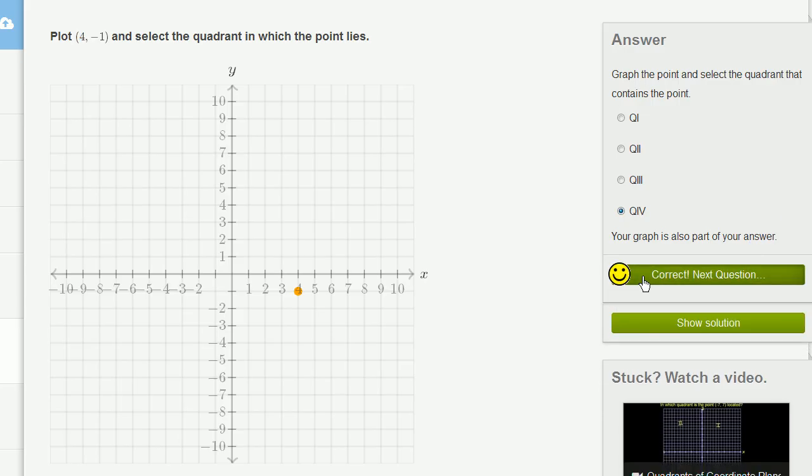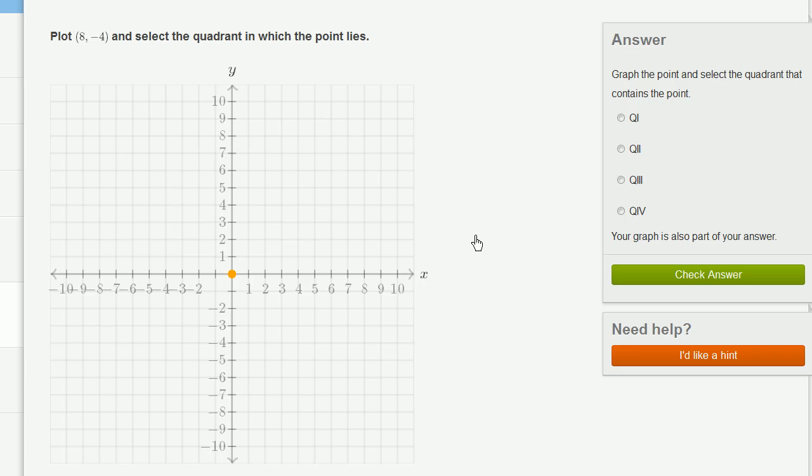Let's do a couple more of these. Plot 8 comma negative 4 and select the quadrant in which the point lies. My x-coordinate is 8, so I go 8 in the positive x-direction.